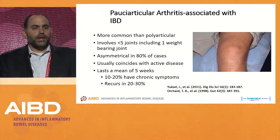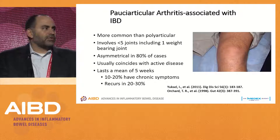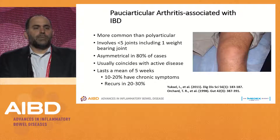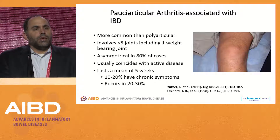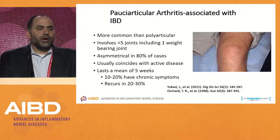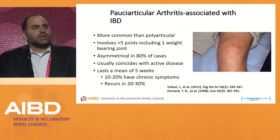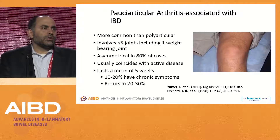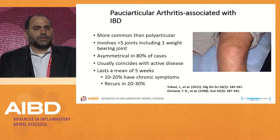Type 1 arthritis is more common than polyarticular arthritis. It typically involves fewer than five joints, usually including one large weight-bearing joint, and is almost always asymmetrical. It usually coincides with active disease, is typically short duration — about five weeks — but 10 to 20% of patients can develop chronic symptoms, and it can recur in 20 to 30% of patients.